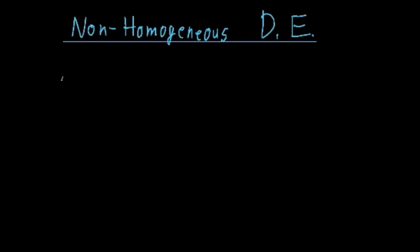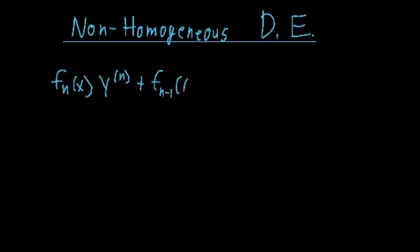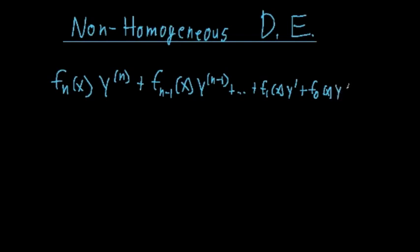Before we talk about that, let's briefly talk about homogeneous differential equations. If you have the homogeneous differential equation of the general form — f_n(x) times the nth derivative of y, plus f_{n-1}(x) times the (n-1)th derivative, all the way down to f_1(x) times the first derivative, plus f_0(x) times y, all equal to zero — this is a linear nth-order homogeneous differential equation. If all of these function terms are continuous on a common interval of x, then there will be n linearly independent solutions.